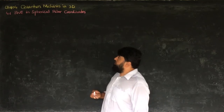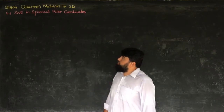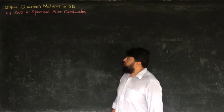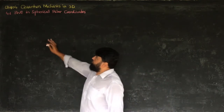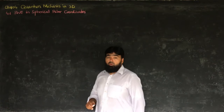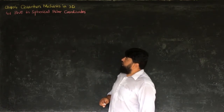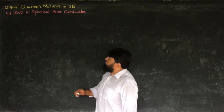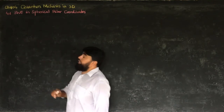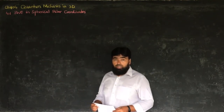So far we have discussed the Schrödinger wave equation in one dimension. Now from chapter 4 we will start with quantum mechanics in three dimensions and we will solve the Schrödinger wave equation in spherical polar coordinates.